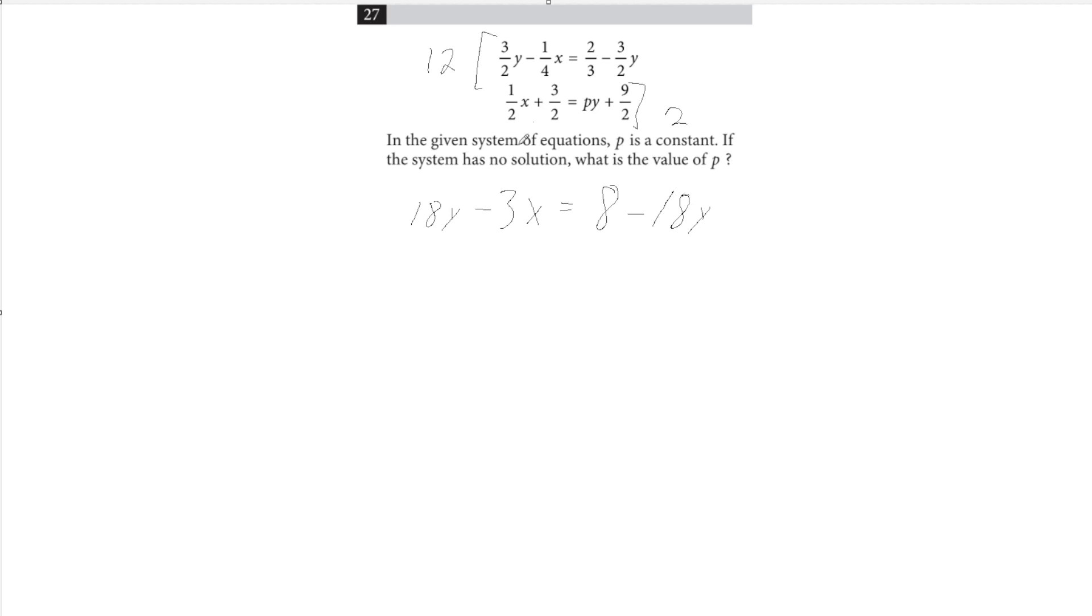Now for this bottom equation, it's a little simpler. We just multiply by 2. First thing becomes 1x, which we can just write as x, plus 3 equals 2py plus 9.